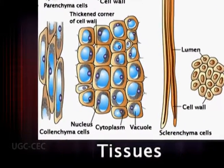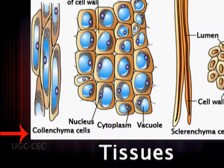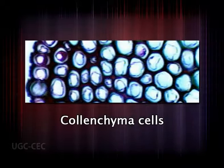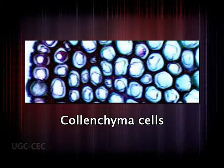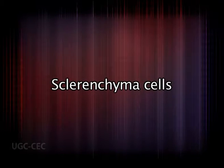Collenchyma cells, like parenchyma cells, have living protoplasts and may live for many years. These cells are usually a little longer than wide and have walls with uneven thickness. They often occur in strands beneath the epidermis of stems, leaf petioles, and along the veins in foliage leaves. Strands of collenchyma provide much of the support for stems in which secondary growth has not taken place.